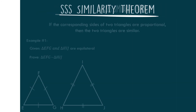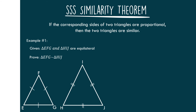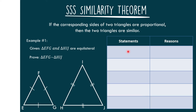So let us have the following example of SSS similarity. Given that triangle EFG and triangle HIJ are equilateral triangles — see the markings — prove that triangle EFG is similar to triangle HIJ. We are going to use a two-column proof.